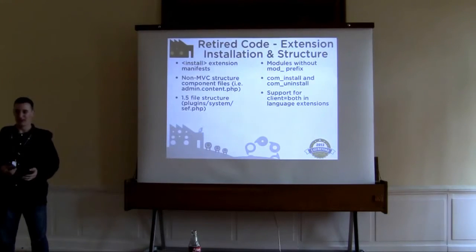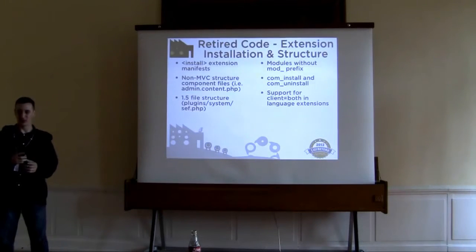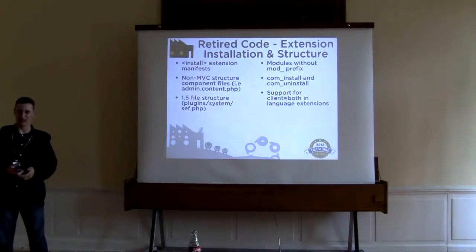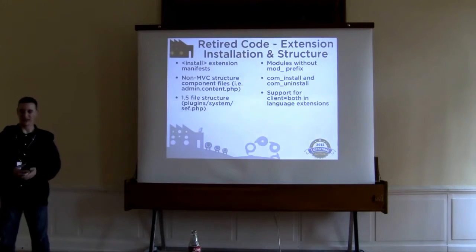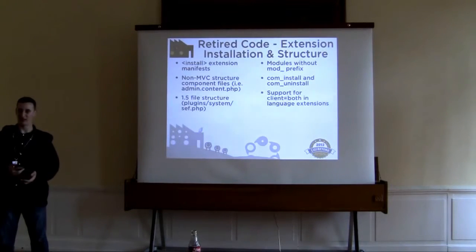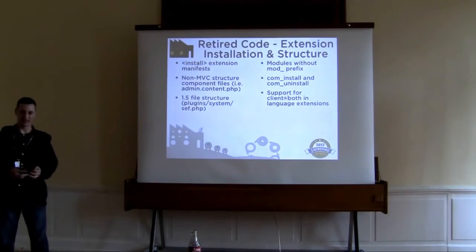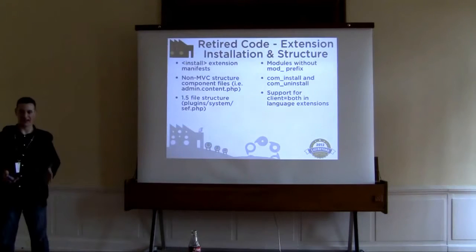The plugin file structure used in 1.5 is no longer supported. In 1.6, it was changed so that each plugin goes in its own folder within the group folder, whereas in 1.5 each plugin file was just in that big group folder. Legacy support for modules that didn't have the mod_ prefix is no longer present — this was a CMS 1.0 legacy feature. The comInstall and comUninstall install script methods have been removed, replaced by the script files introduced in CMS 1.6. And support for the 'client both' attribute in the root tag has been removed; the preferred method is now a single extension for each client, bundled in a package extension.